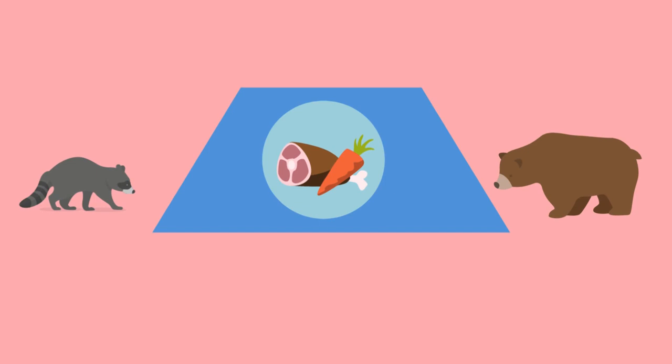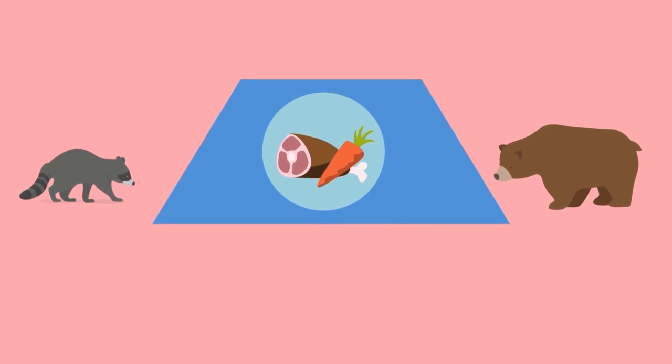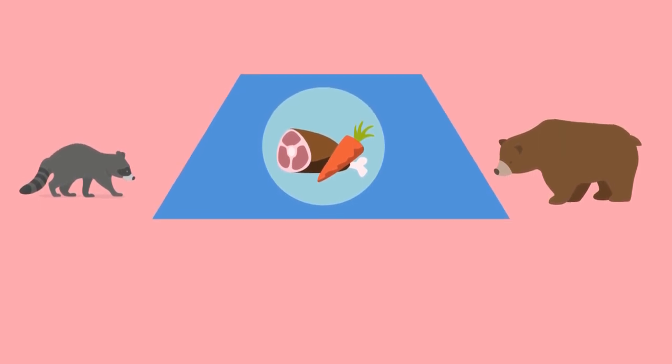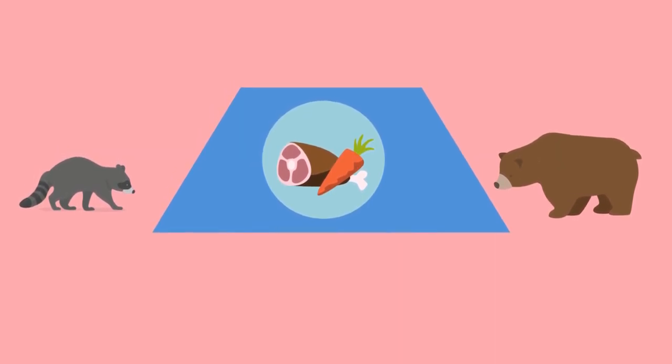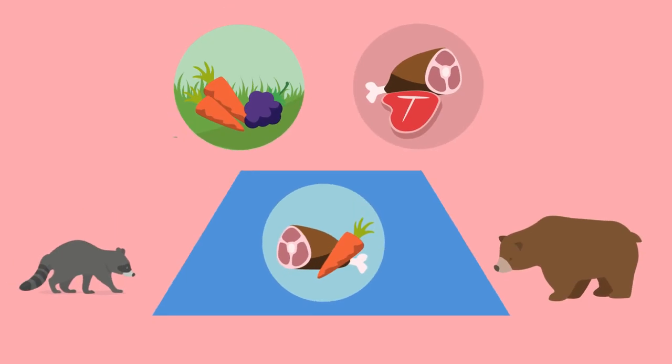Which trophic level do you think has the most direct interaction with other trophic levels? Pause the video and have a think. If you said the intermediate trophic level, or the one that contains omnivores, you're right! Omnivores tend to eat a much wider variety of organisms than either of the other two trophic levels. This variety in their diets leads to them having more direct interactions than other trophic levels.